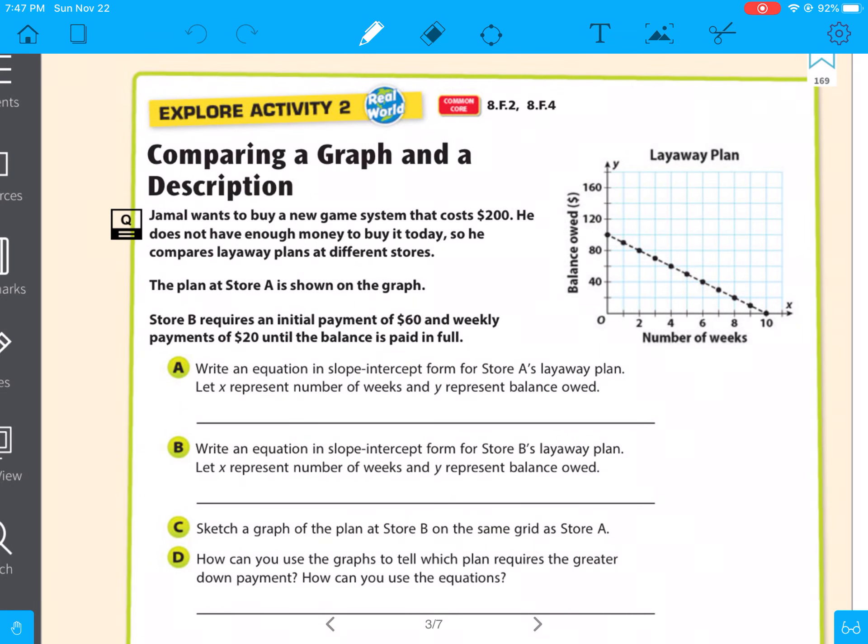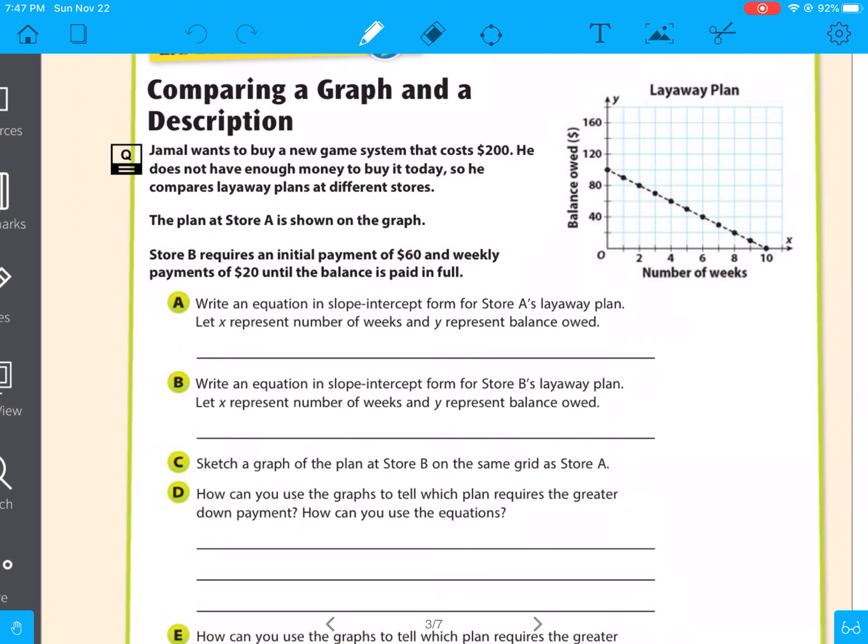So now we have comparing a graph and a description. So it says, Jamal wants to buy a new game system that costs $200. He does not have enough money to buy it today. So he compares layaway plans at different stores. The plan at store A is shown on the graph. Store B requires an initial payment of $60 and weekly payments of $20 until the balance is paid in full.